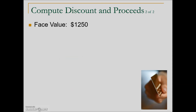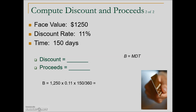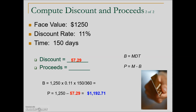Another example: face value of $1,250, discount rate of 11%, and a term of 150 days. The bank discount is calculated by taking the face value times the discount rate D times the time T expressed in years, giving a charge of $57.29. When working with money, we always round to two decimal places. Once we have the bank discount, we calculate the proceeds by taking the maturity value minus the bank discount, giving the amount the individual will have use of during the 150-day loan.